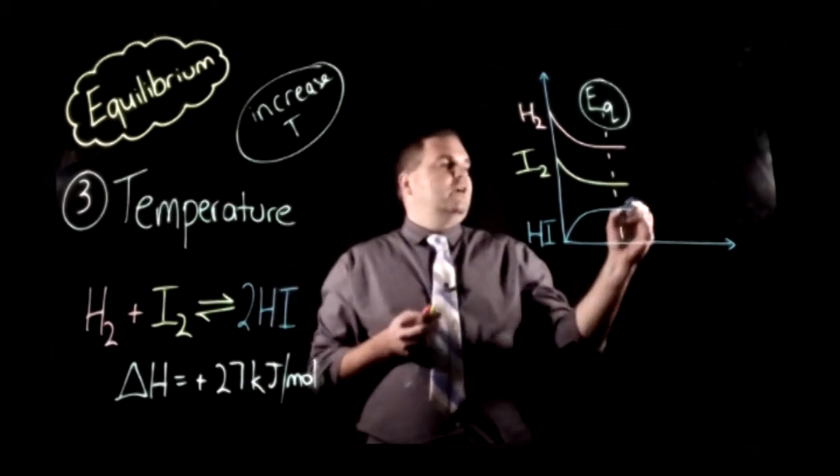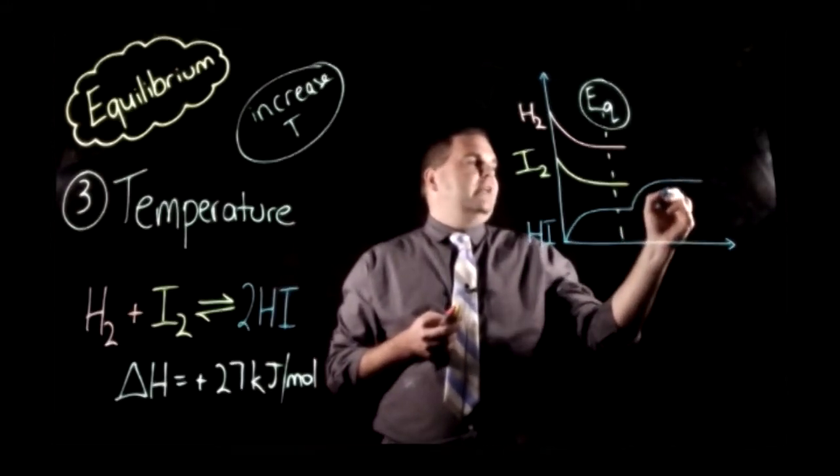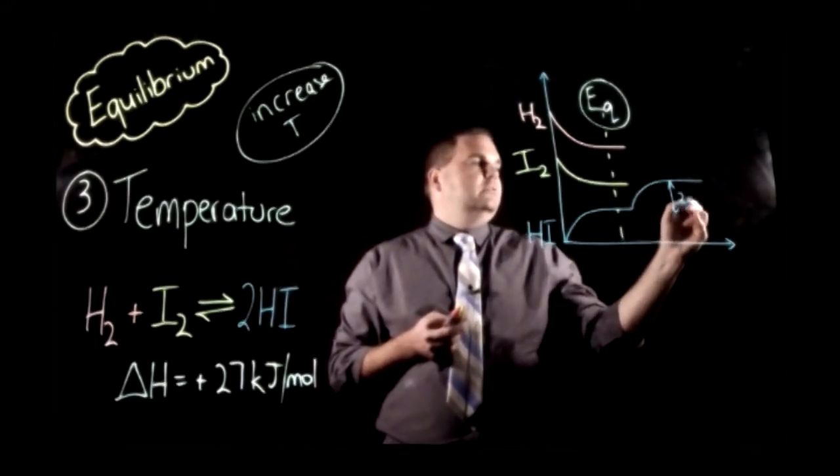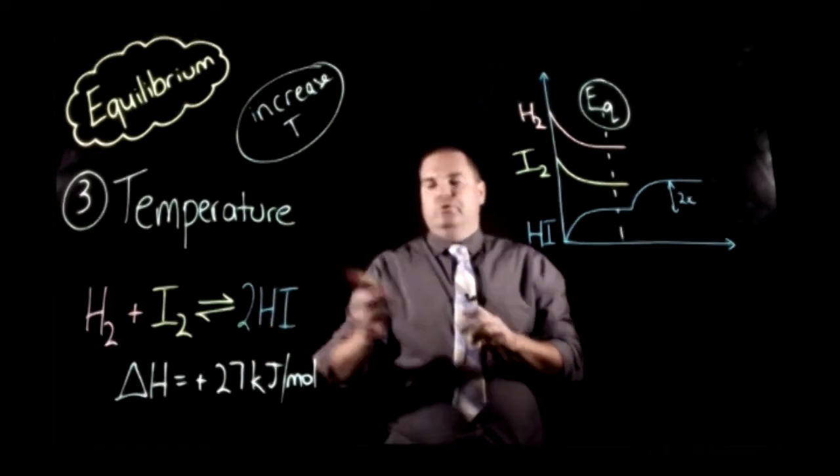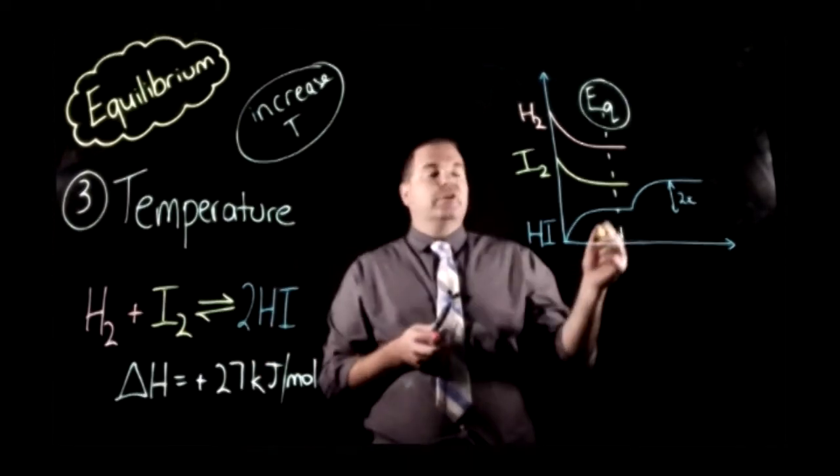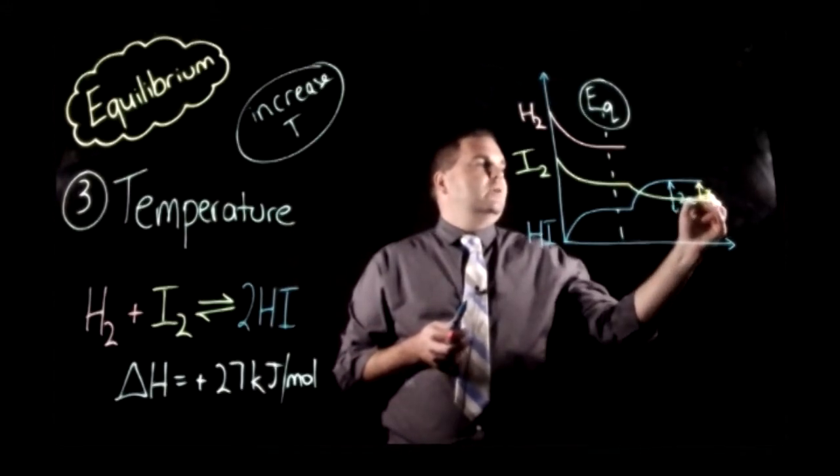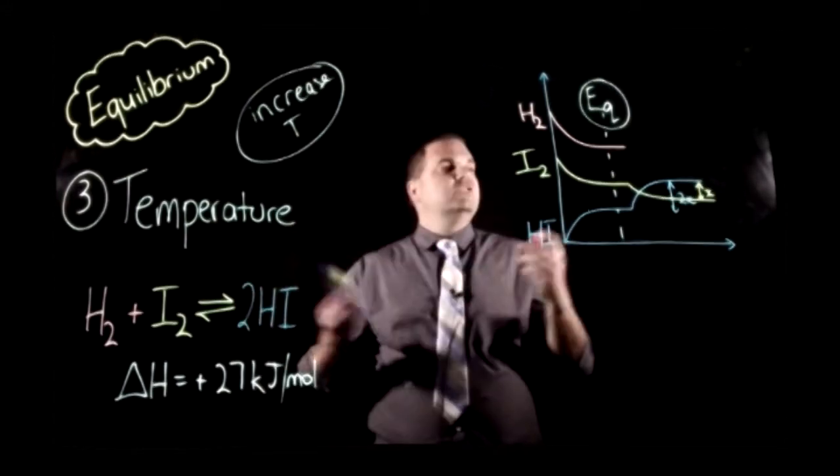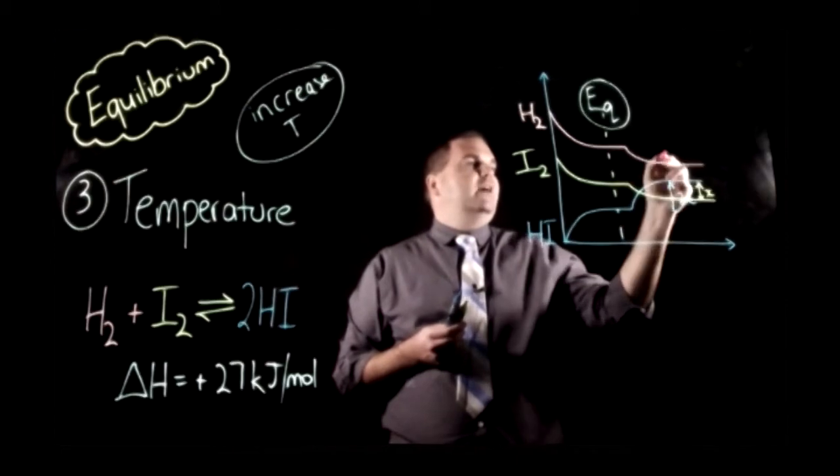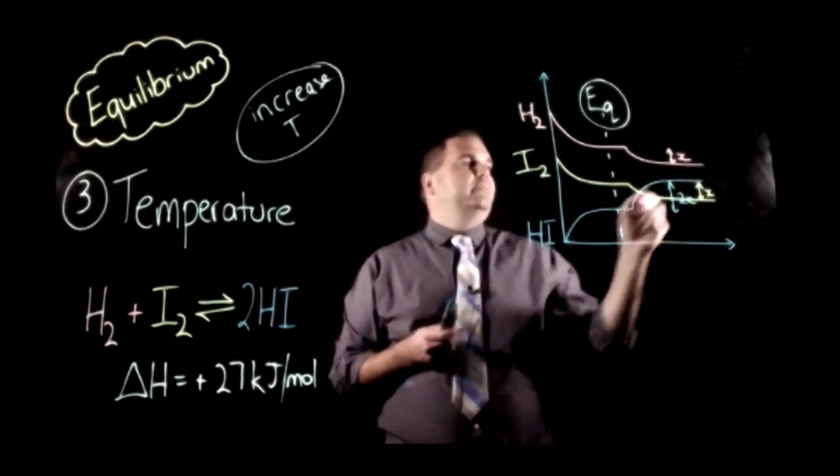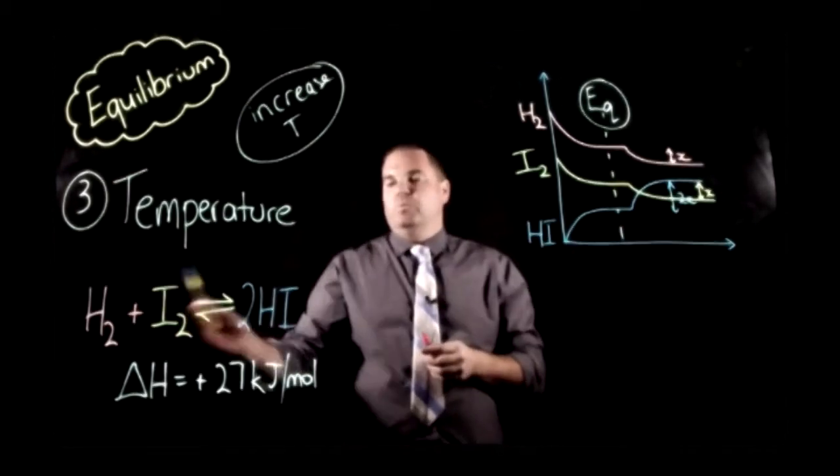So our hydrogen iodide is going to go up by 2x value, because it's a 1-1-2 ratio. Our hydrogen is going to go down by a ratio of 1x. And our hydrogen is going to also go down by a value of 1x as well. Keeping that 1-1-2 ratio.